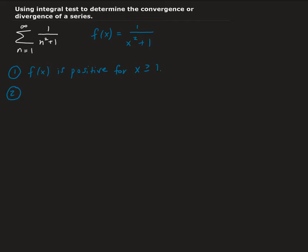The next condition is that we have to see if the function is continuous. This function is continuous because, looking at the denominator, there's no possibility that it can give us 0 for any x, because we're working with real values. So it is continuous on the interval that we're interested in.